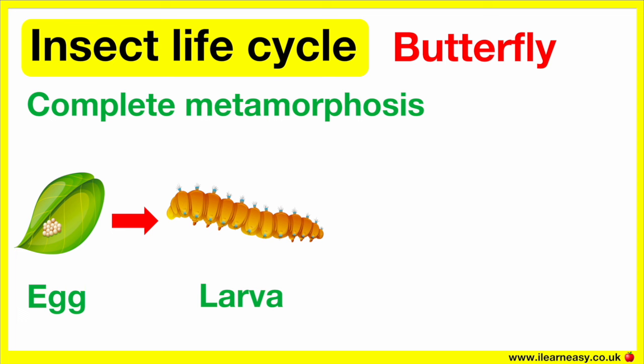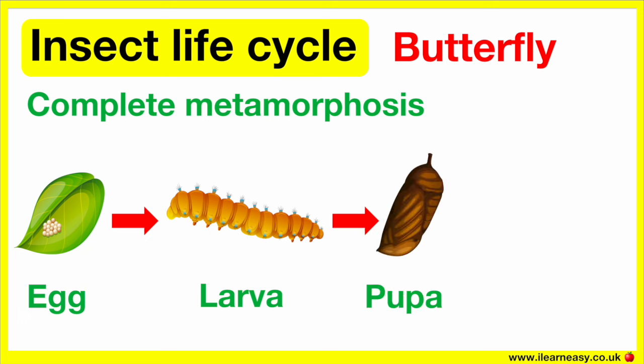When the caterpillar is large enough, it leaves the egg by eating it. The caterpillar must eat so it can grow. Once it grows, it splits its skin and sheds a few times. When the caterpillar has fully grown, it forms itself into a pupa — a type of vessel in which the caterpillar changes into a butterfly. The pupa of the butterfly is also called a chrysalis.